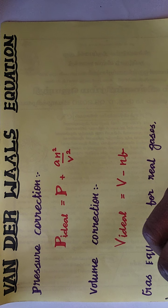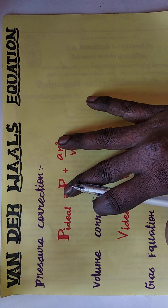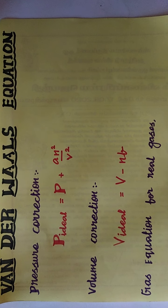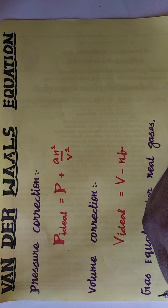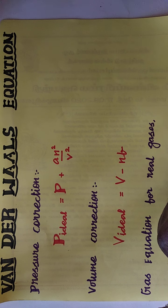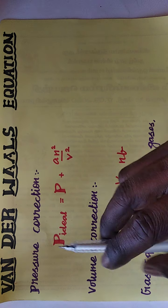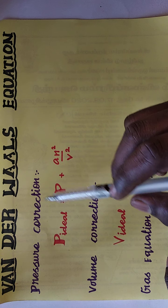Hello students. In the 11th standard chemistry, lesson number six, Gaseous State, the concept we are going to see today is Van der Waals' equation. Van der Waals is the name of a scientist who first attempted to explain the behavior of non-ideal gases. He derived an equation called the real gas equation, also known by his name as Van der Waals' equation.